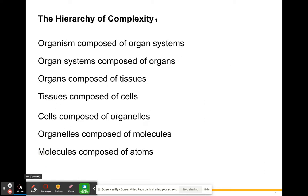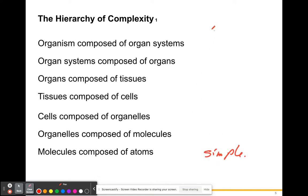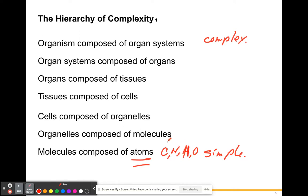One thing we need to know is the hierarchy of complexity, which means there are levels of organization found in science and especially biology. Starting from the least complex and going up to the most complex: we start off with atoms — carbon, nitrogen, hydrogen, oxygen. These are not living things on their own, but they are the simplest parts that can make up living things.